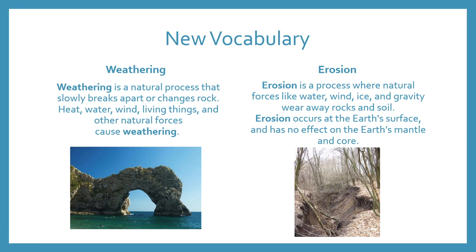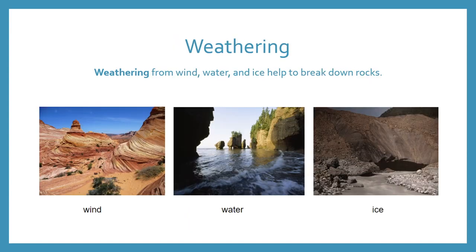Weathering and erosion are similar, but they are not the same. Let's learn some more about weathering. Remember that weathering from wind, water, and ice help to break down rocks. The first one is weathering from wind. You can see how it looks like wind has gone through the canyon to cause the stripes along the rocks.